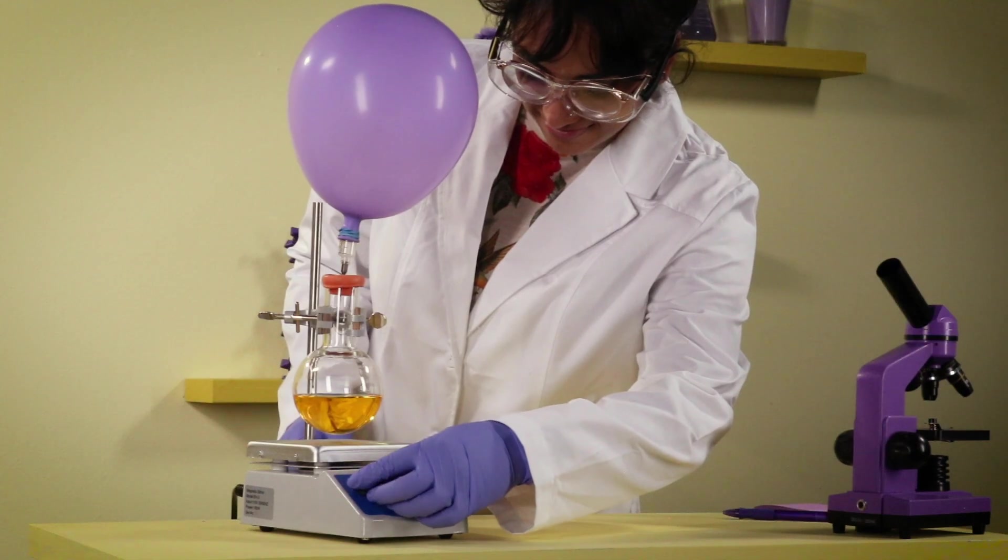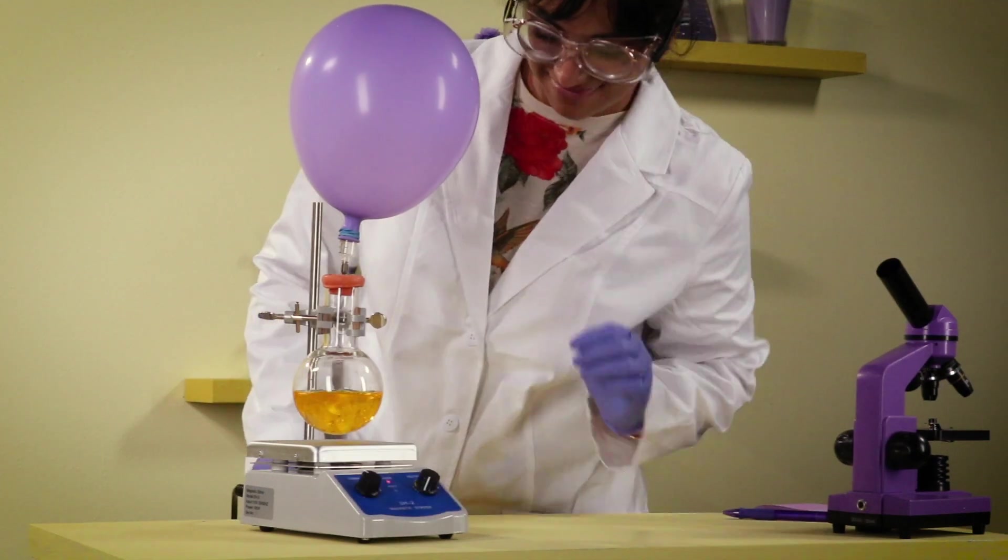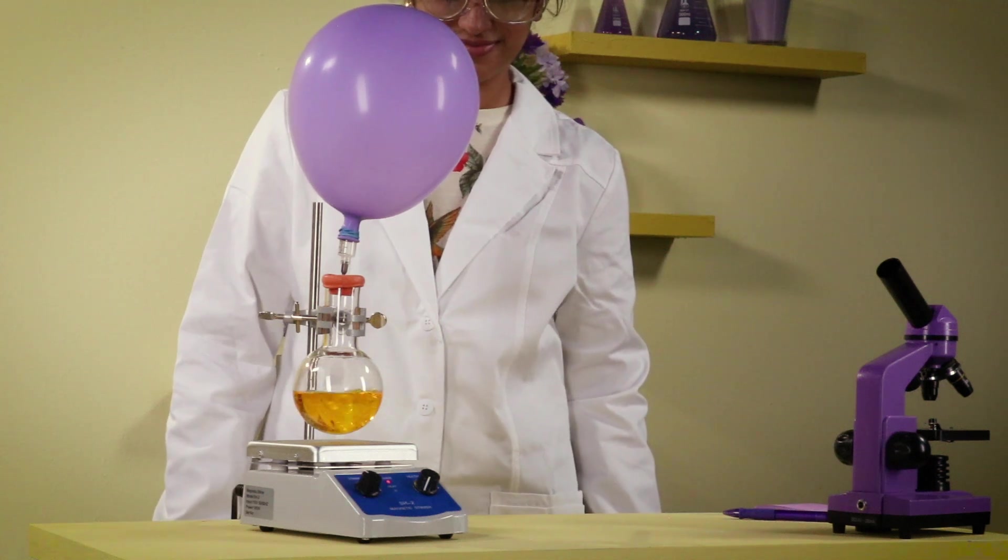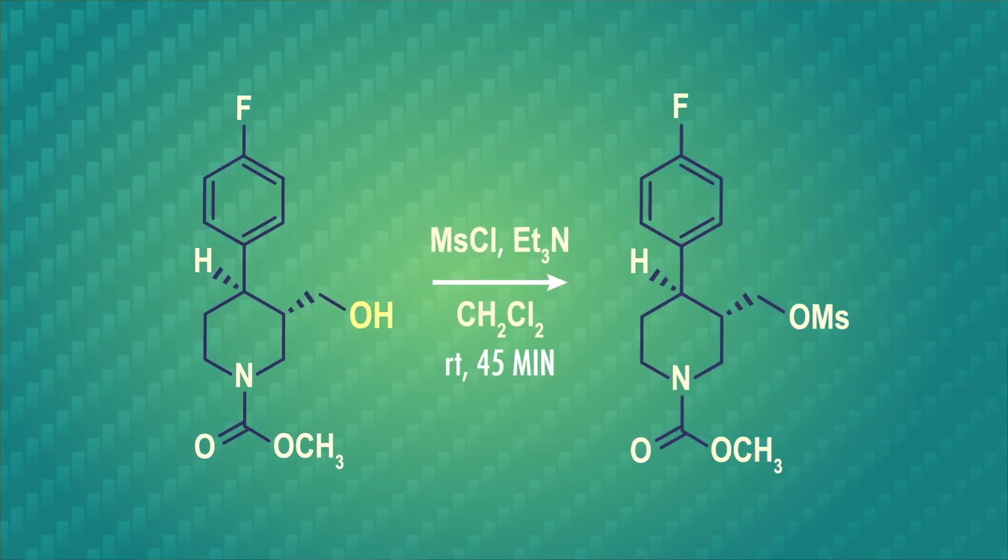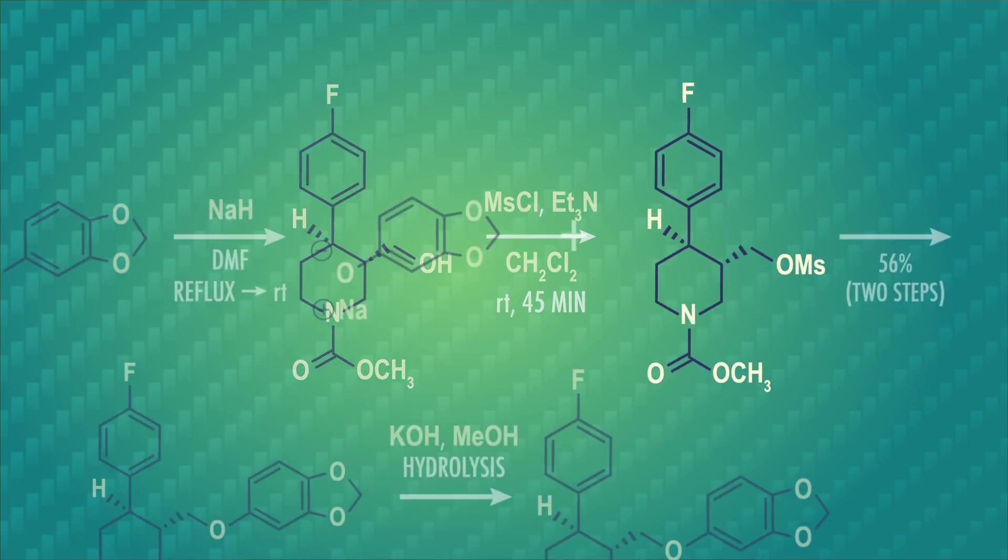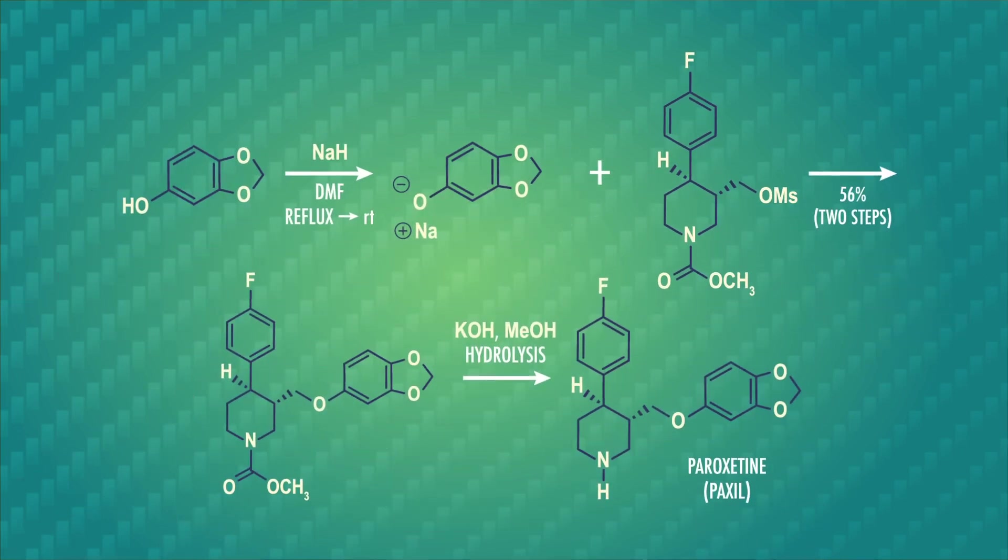Many reactions produce mixtures, sometimes due to competing side reactions and sometimes because the starting material didn't completely react. For example, let's look at a synthesis of the antidepressant medication paroxetine, also called paxil. We're starting with an alcohol, and our goal is to turn it into an ether. Remember that hydroxide is a poor leaving group, so in this synthesis we react the alcohol to form a mesolate. Now we have a great leaving group, and can use the Williamson etherification reaction to make the ether.